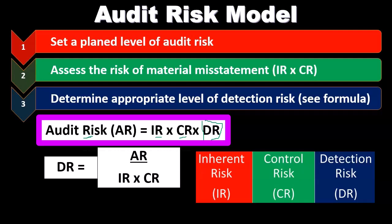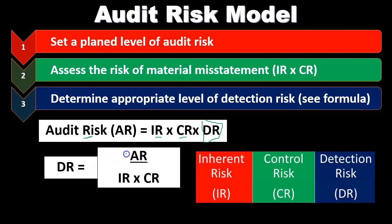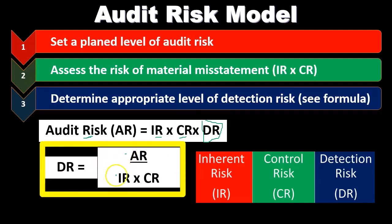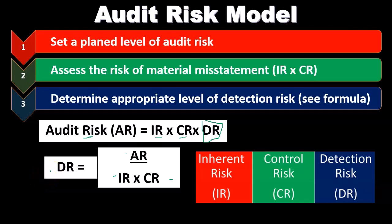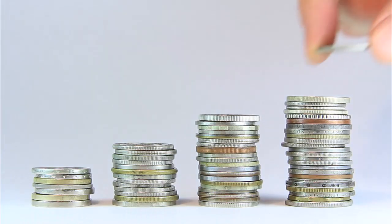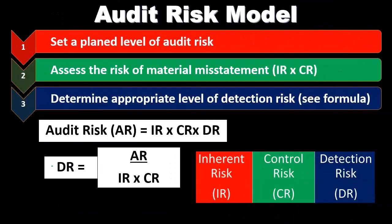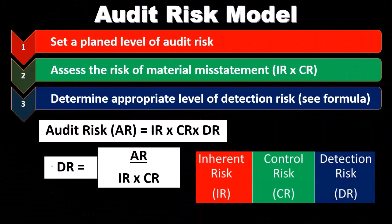We set the audit risk, we determine the inherent risk and control risk, and then we solve for the detection risk. Detection risk is the risk that our audit will not detect a material misstatement. It's easy to get confused about whether detection risk should be high or low. We want detection risk to be low — we want our audit to detect misstatements. But note there is an interplay between detection risk and the other factors.